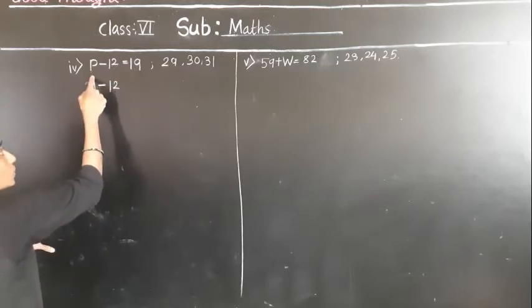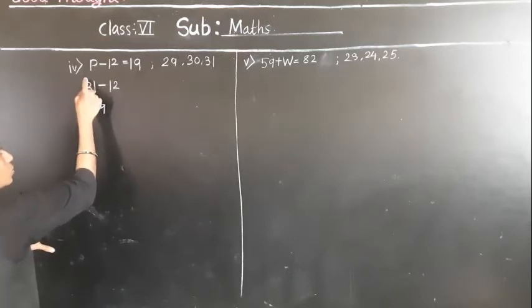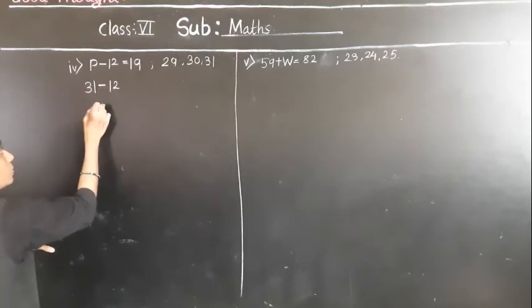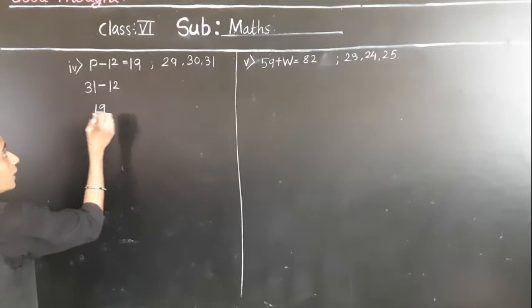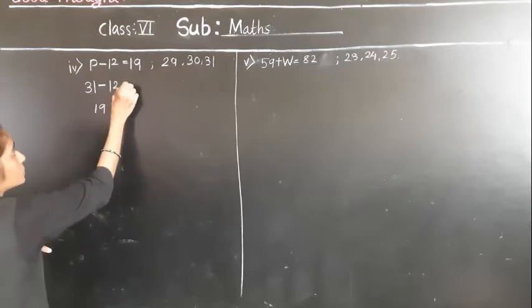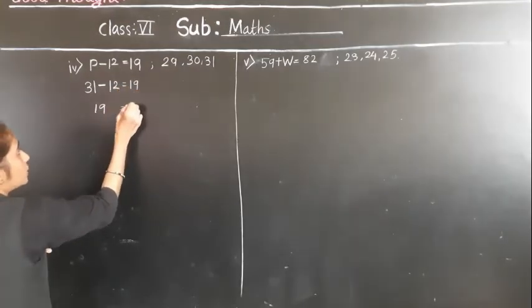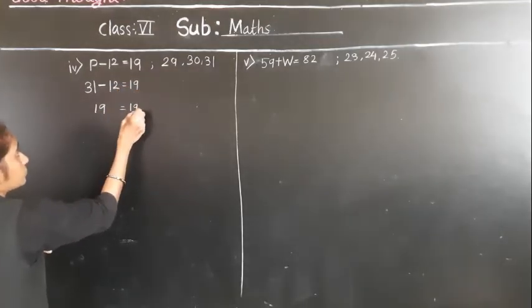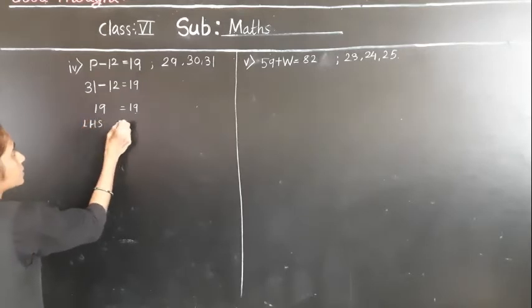Take borrow: 11 minus 2 is 9. What remains is 2 minus 1, which is 1. So we get 19. We got 19 on the left hand side.